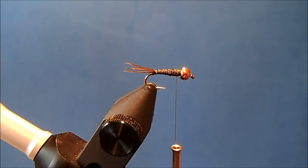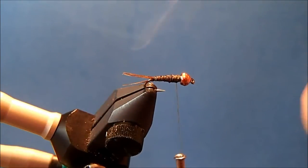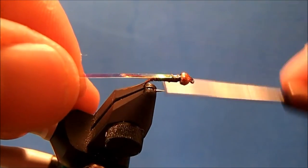The wing casing for this is a two-part process. It's got some pearl tinsel to it, so I'll take a piece of pearl tinsel, set this right on top and tie it in.